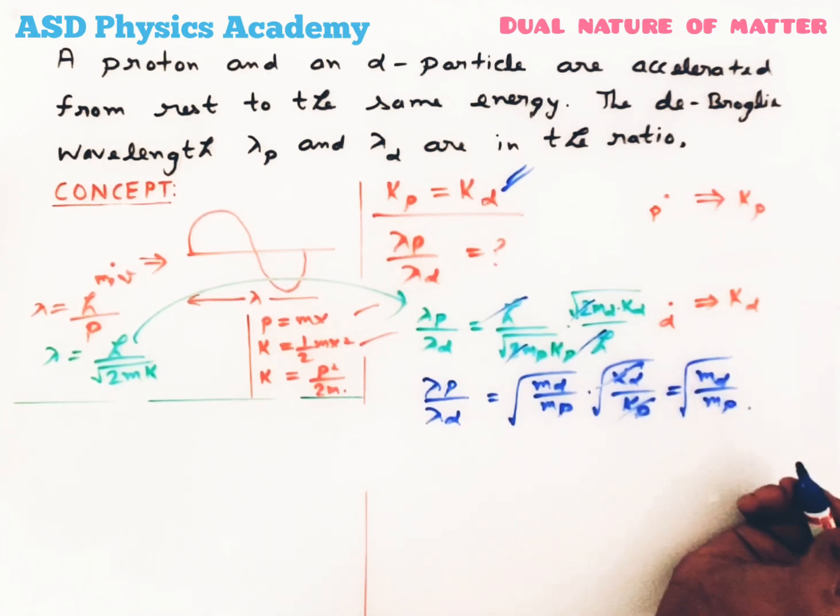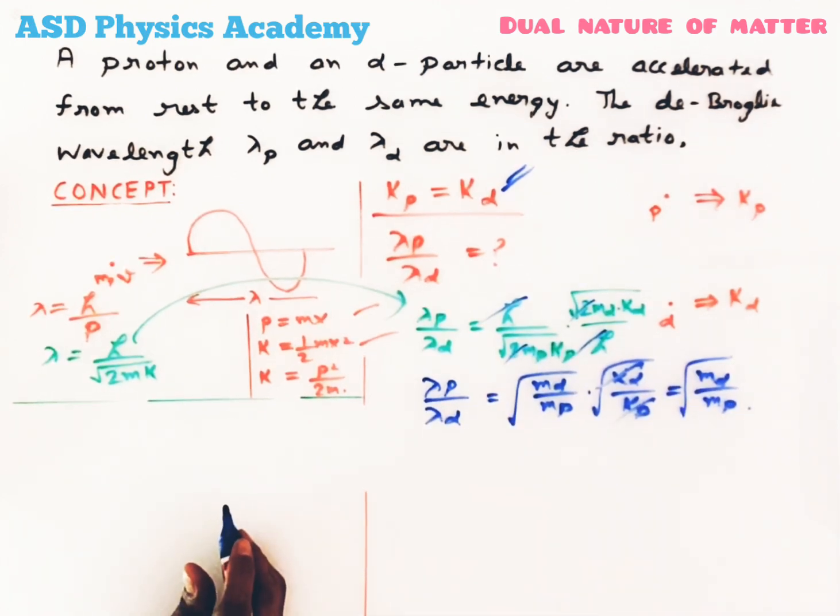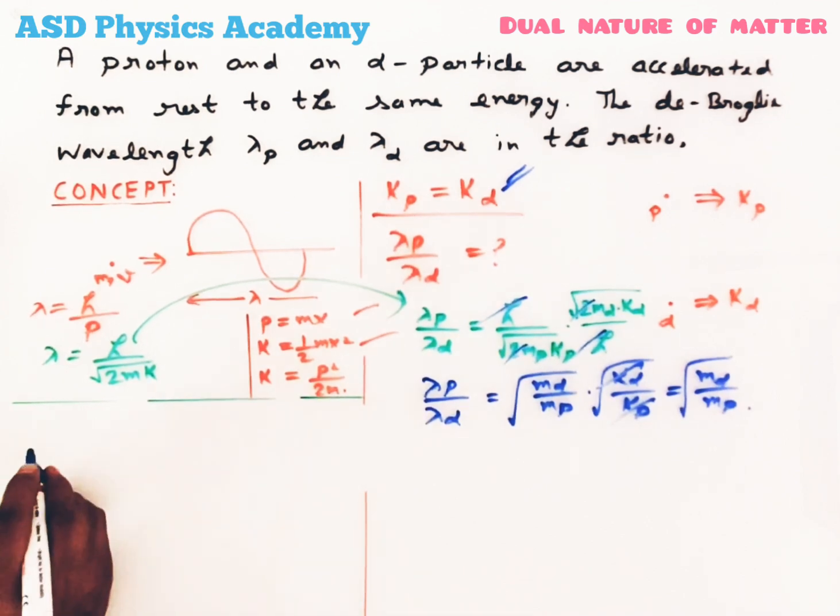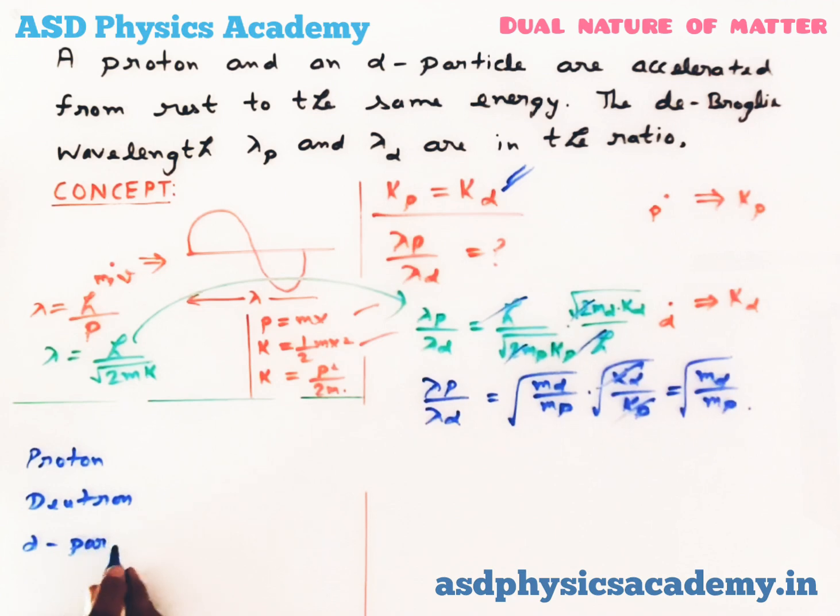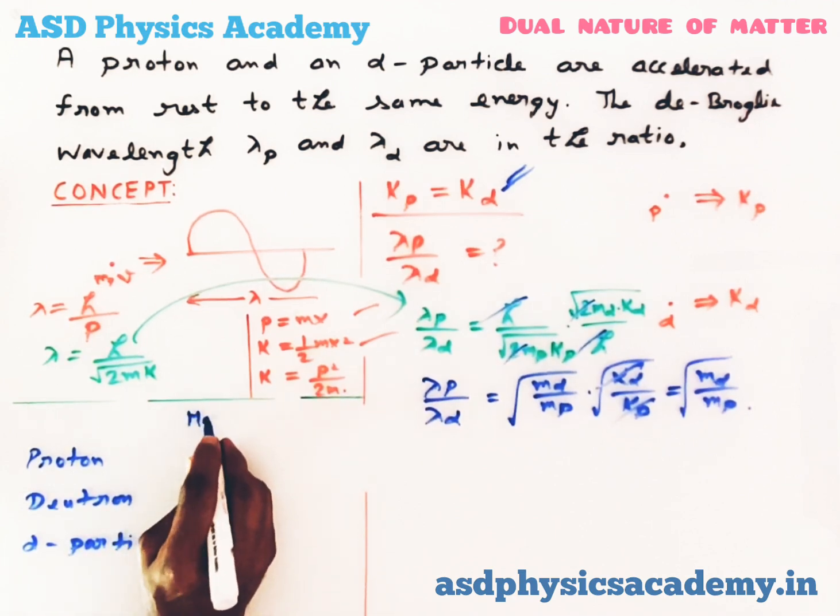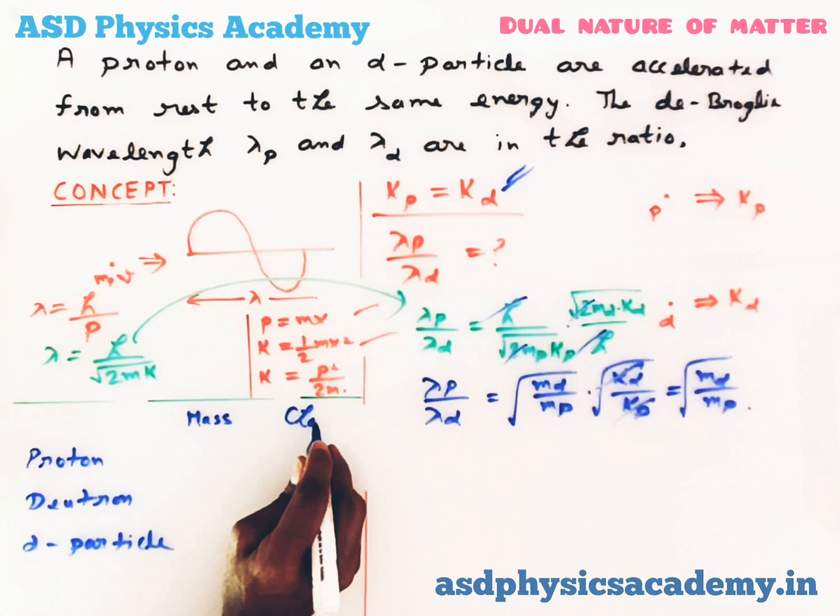Now you have to remember the relation between mass and charge for three particles: proton, deuteron, and alpha particle, because these three particles are normally used in the exam. I'm writing mass and charge.